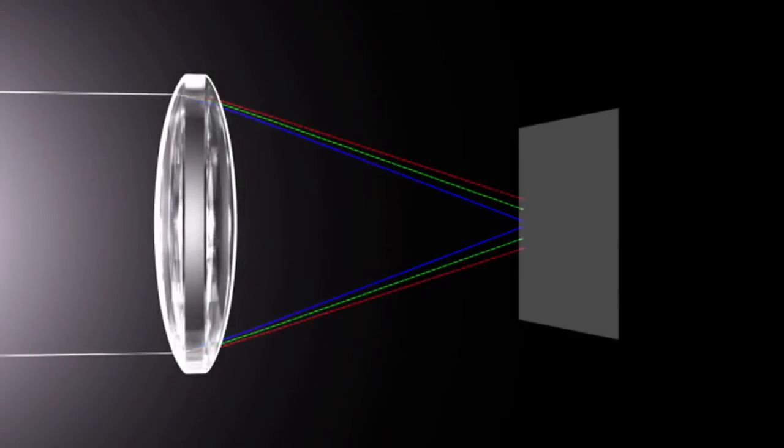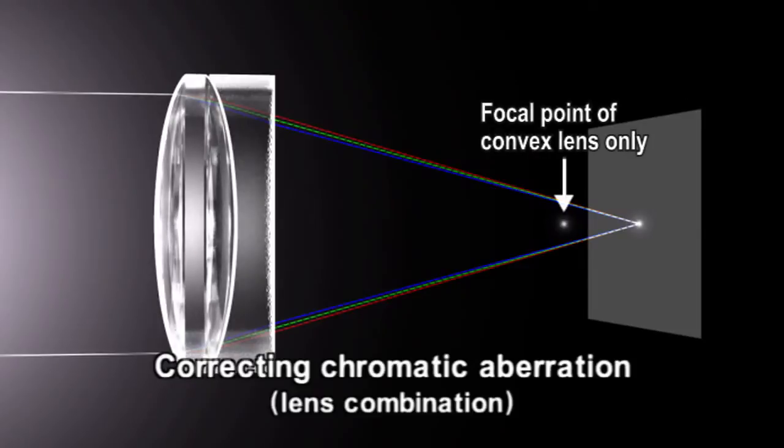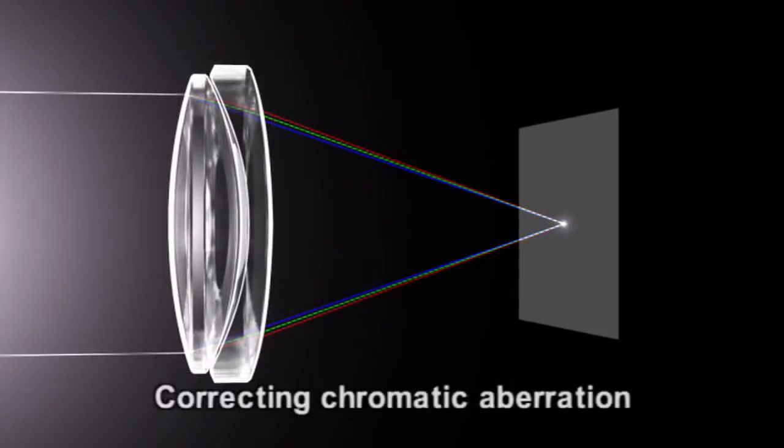Chromatic aberration can also be corrected by combining convex and concave lenses. Moreover, by joining lenses made of different materials, it is even possible to correct chromatic aberration without changing the position of the focal point.